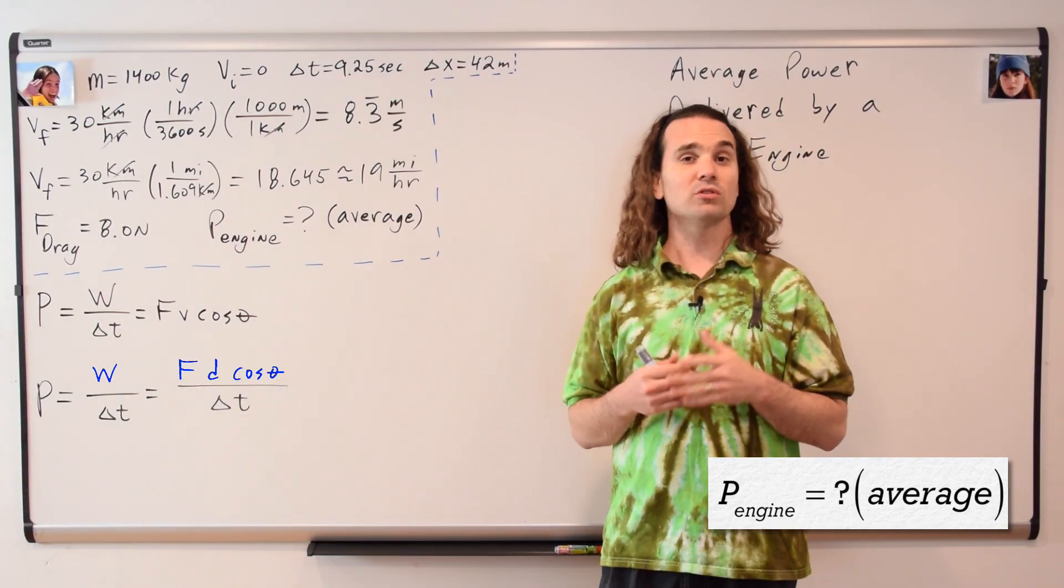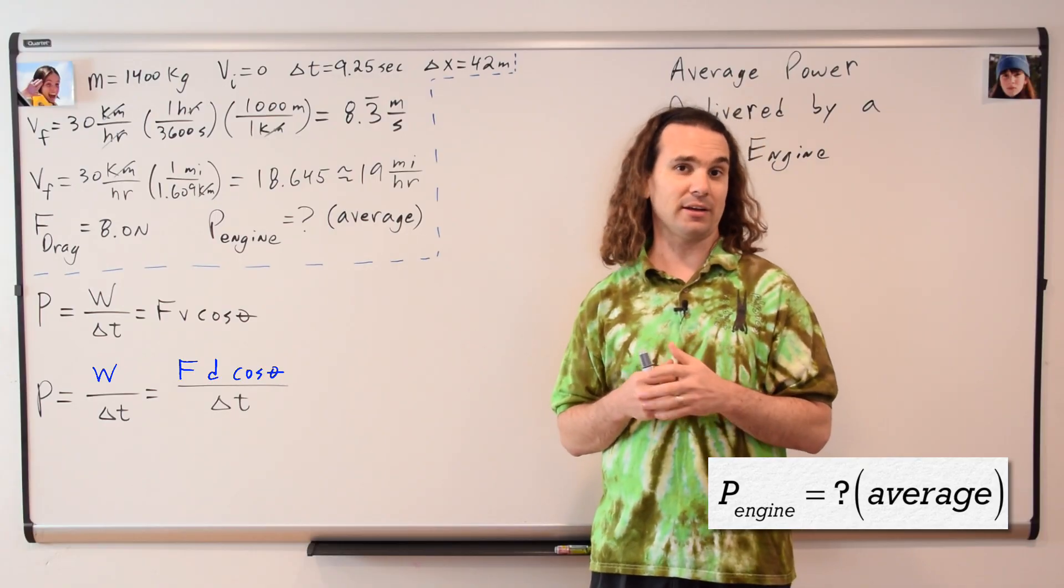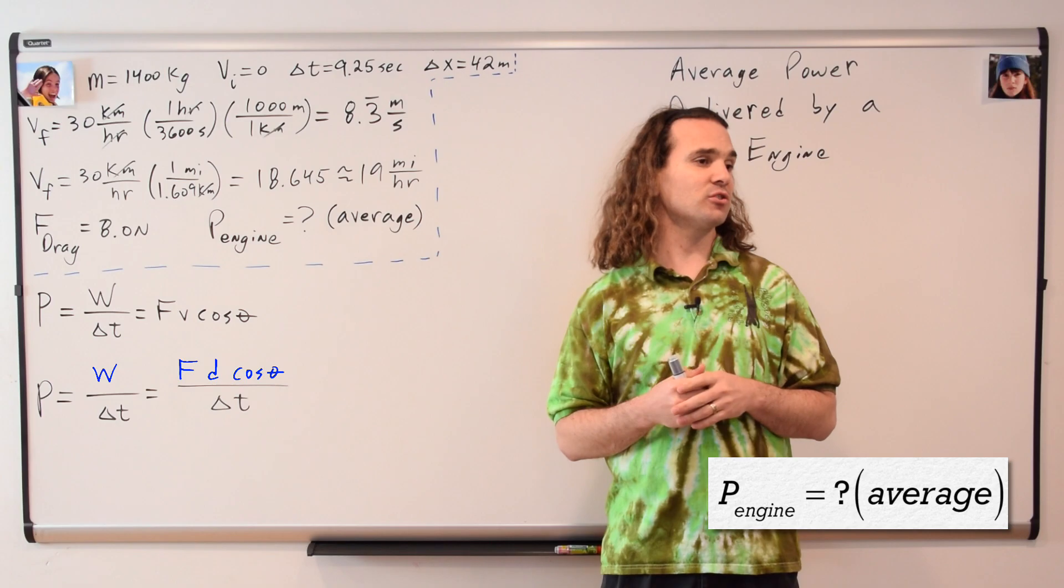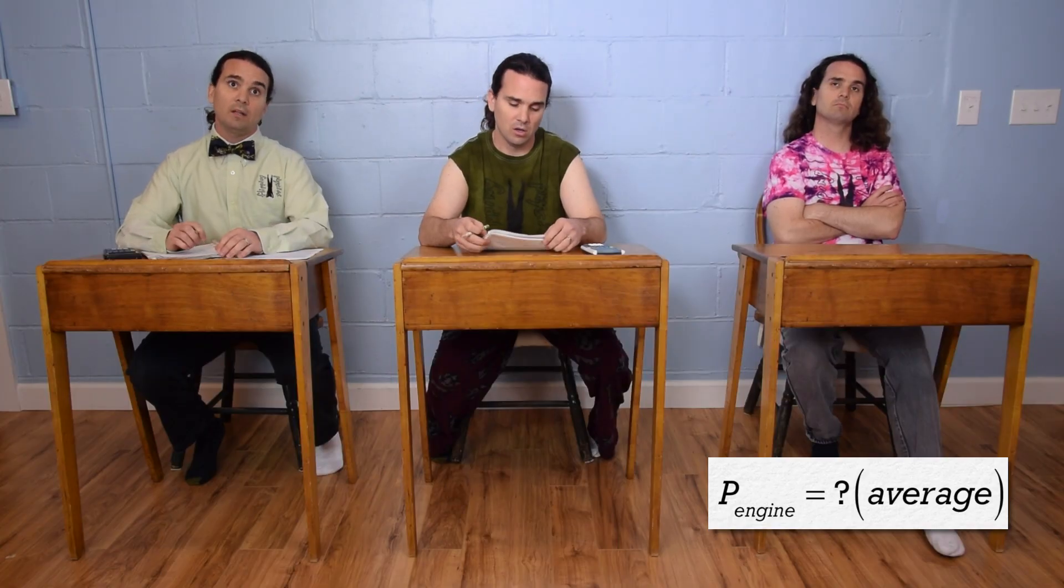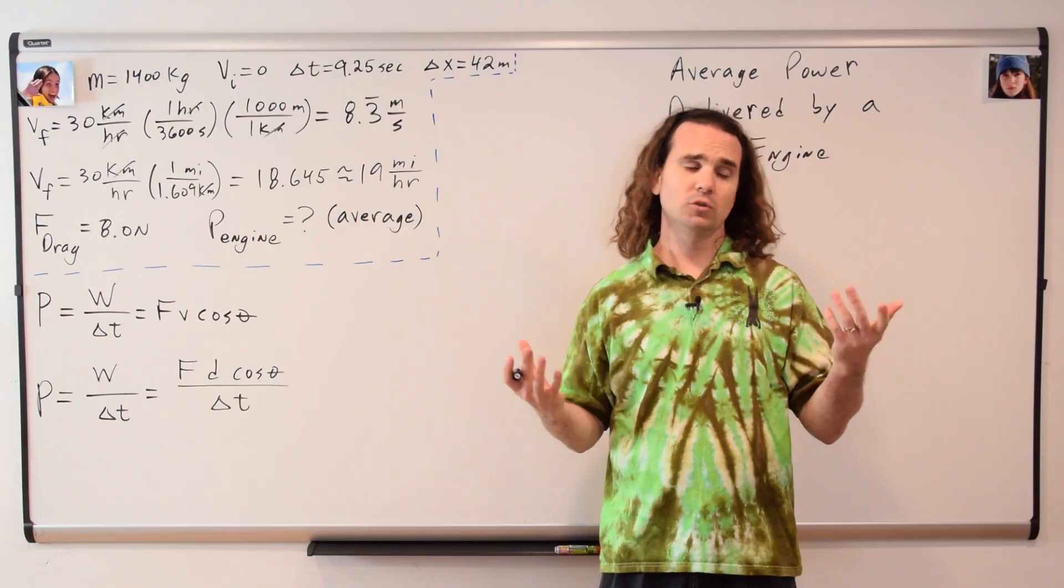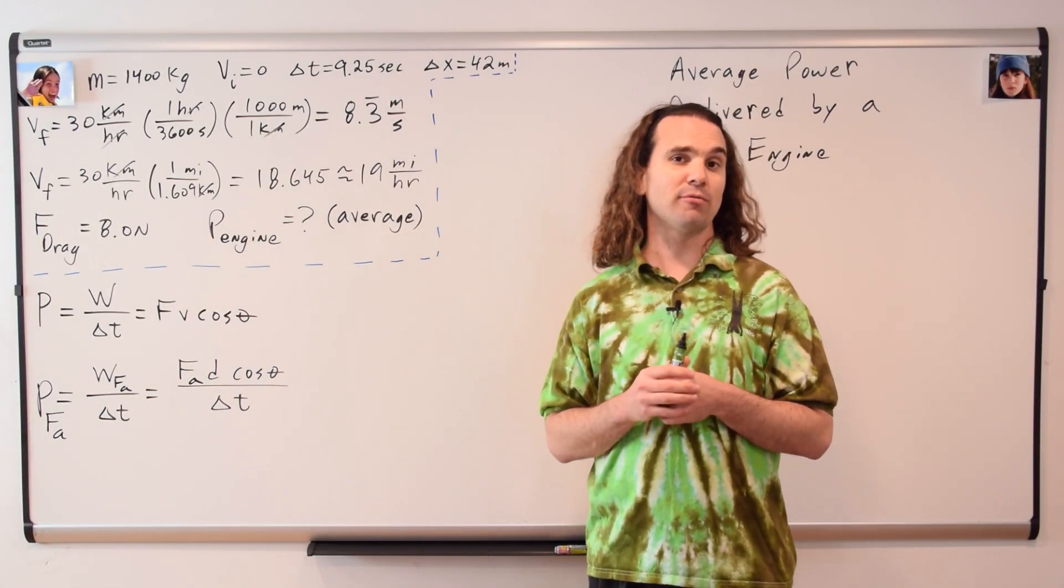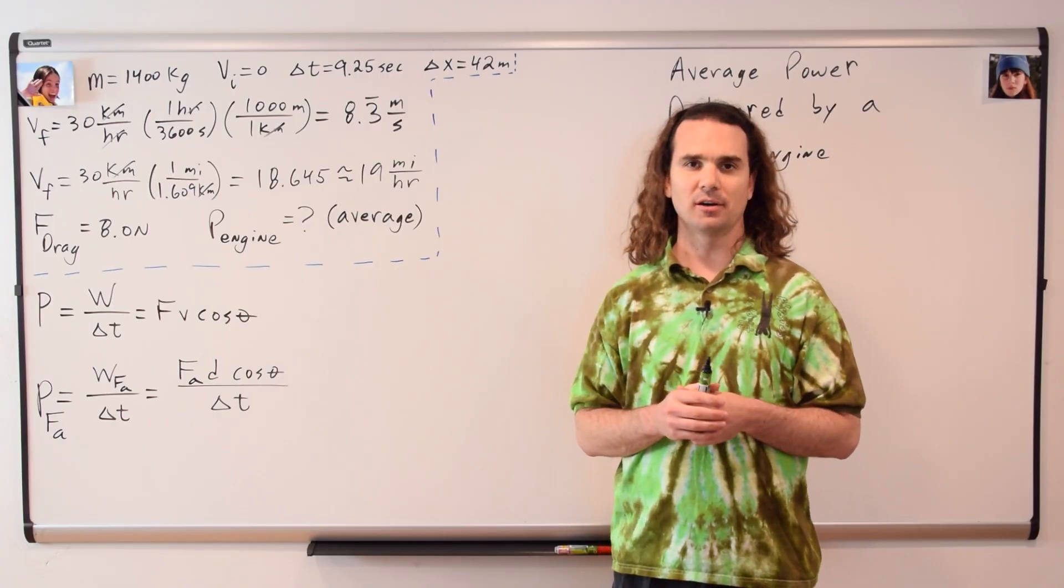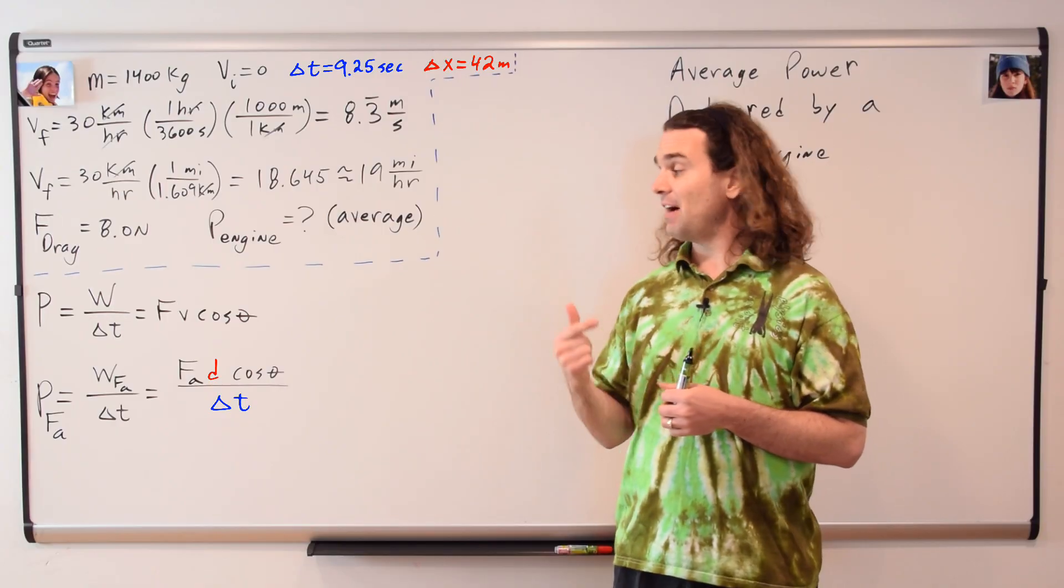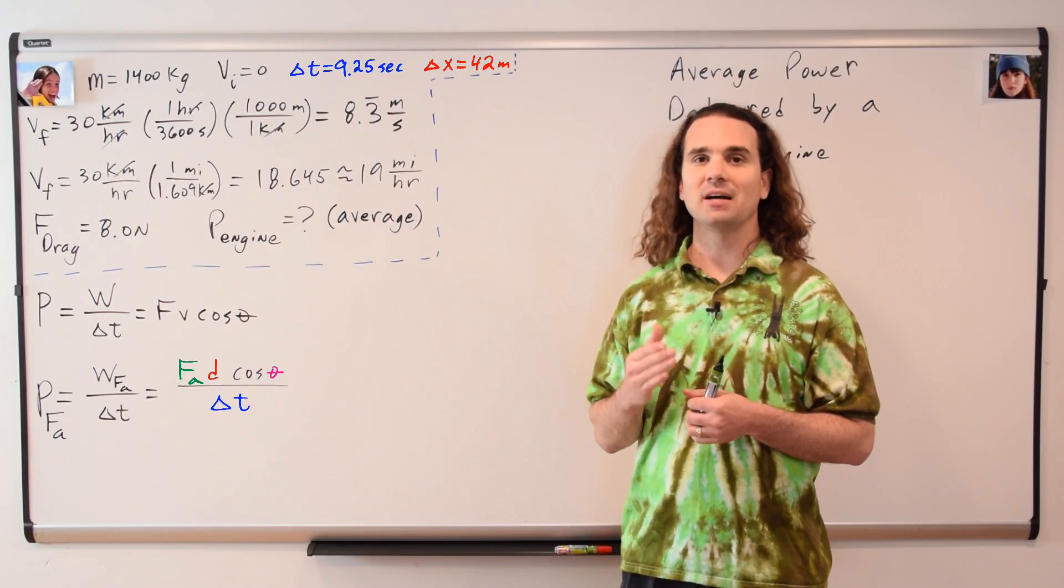Work equals force times displacement times the cosine of the angle between those two vectors. Billy, what force does the engine deliver to the car? Well, can we call it a force applied by the engine on the car? Sure. We are solving for the average power delivered by the force applied to the car. Notice how we already know the change in time and the displacement, but we need to find the force applied and the angle theta between the direction of the force applied and the direction of the displacement.